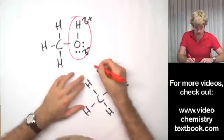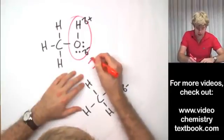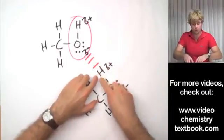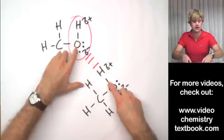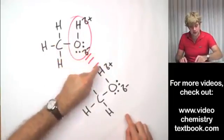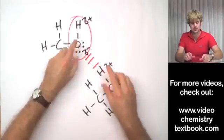Sometimes hydrogen bonds are drawn by a series of dots or a series of dashes just like this between the positively charged hydrogen of one molecule and the negatively charged atom of another molecule. So these lines here show the hydrogen bond between these two molecules.